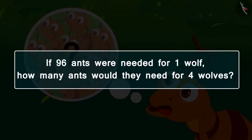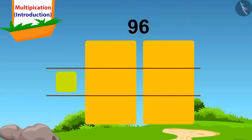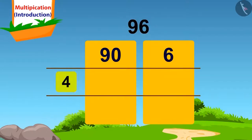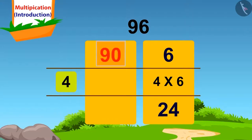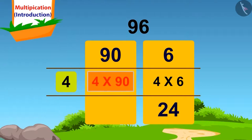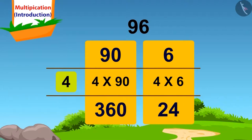Let's do it together. How do we split 96? 90 and 6. We will first multiply 6 of 96 by 4. 4 times 6 is 24. We will write this answer here. Now we will multiply 90 by 4 — 4 times 90. Just by placing a 0 next to the answer of 4 times 9, which is 36, we will get the answer 360.